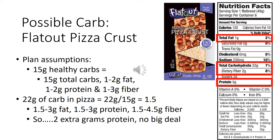Now let's switch gears and look at possible carbohydrate options. It may get a little boring eating rice for every meal, so you want to mix things up. Our plan assumptions for healthy carbs: per 15 grams of carbs, you can expect one to two grams of fat, one to two grams of protein, and one to three grams of fiber depending on the product.